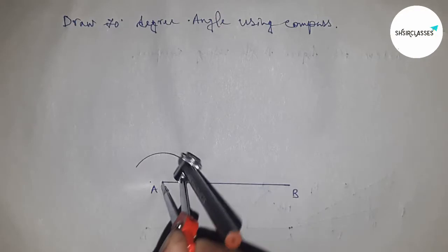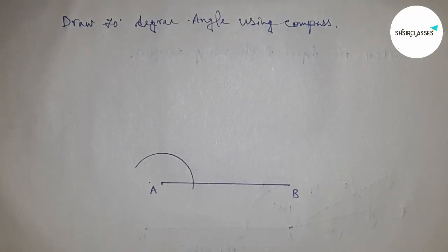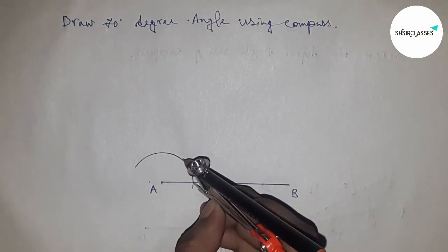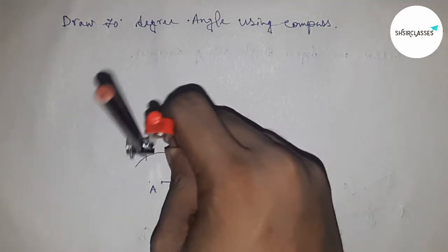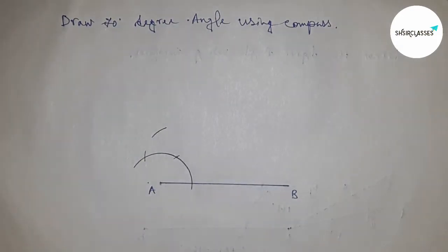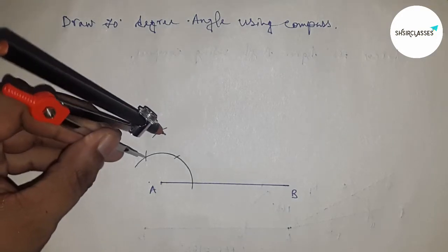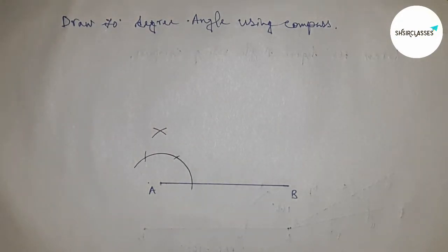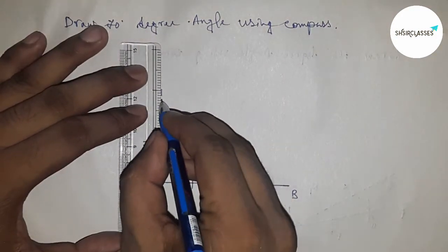an arc by this way. Next, with the same length, put the compass and cut the arc by this way. First of all, we're constructing a 90-degree angle, so doing this